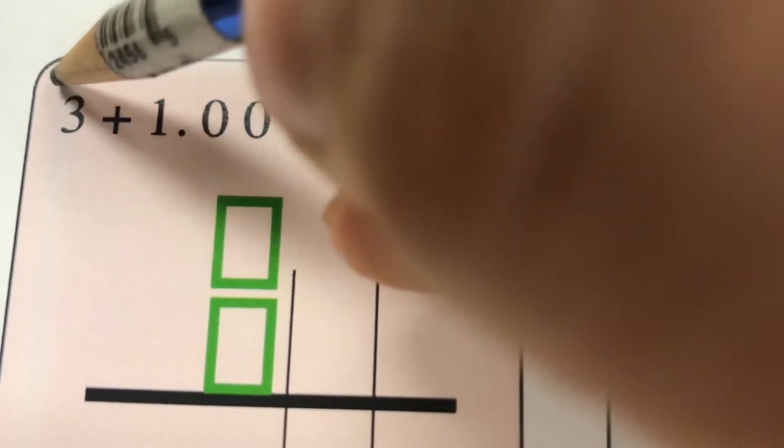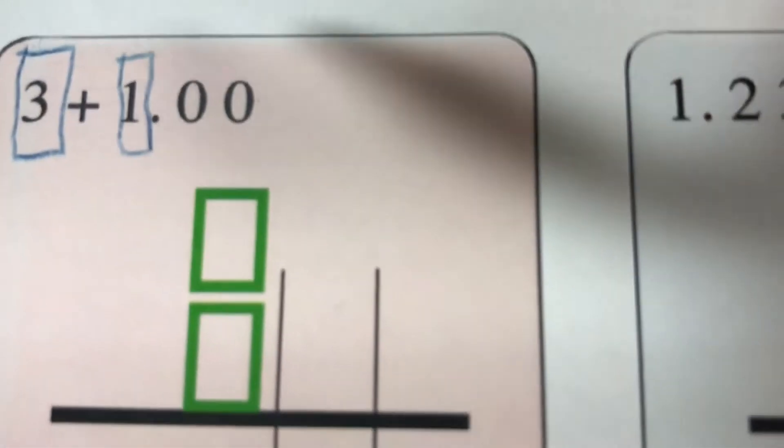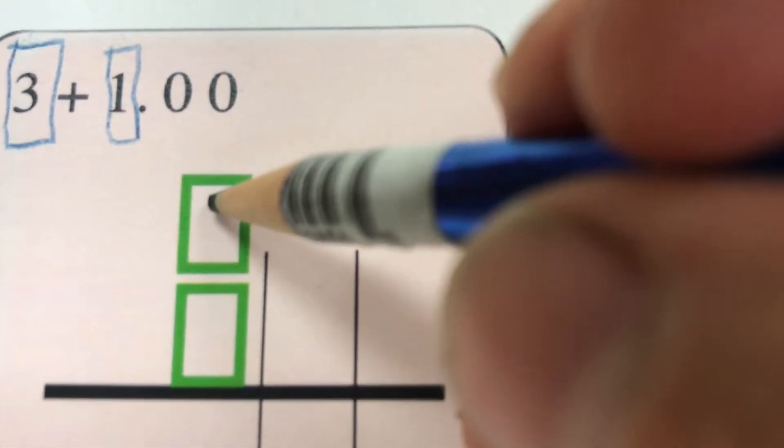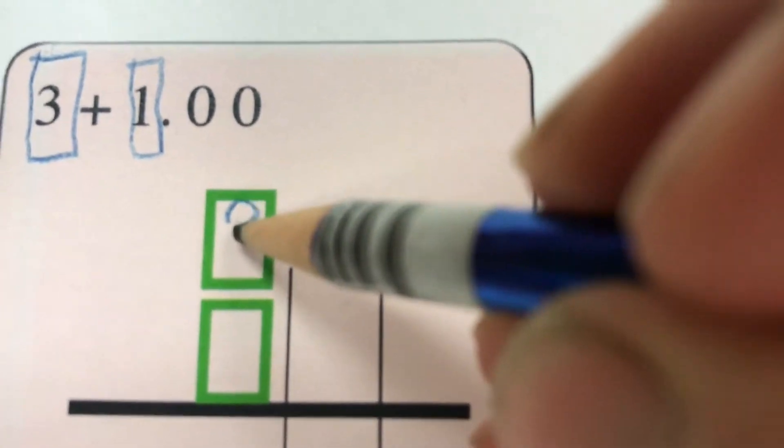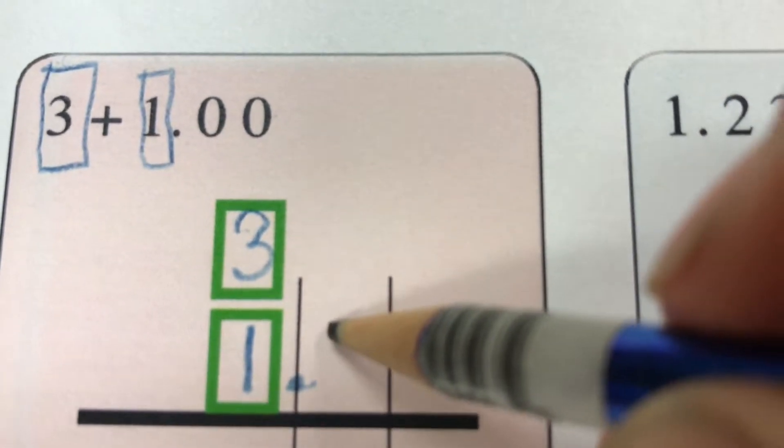Box the ones as in one dollar bills. Now when you set that problem up, instead of thinking of something abstract like lining up the decimals, let's think of lining up the one dollar bills. The other digits go along for a ride.